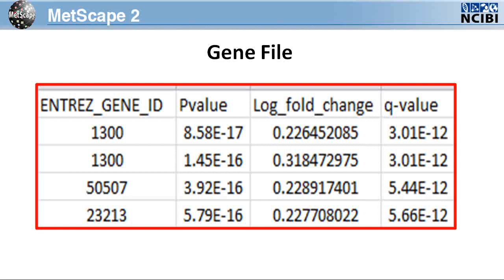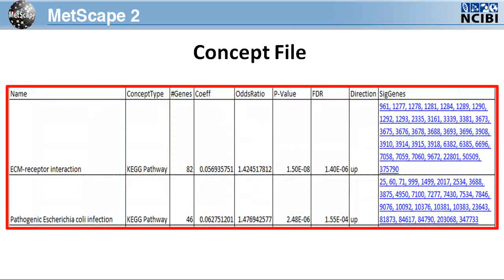This portion of the tutorial will cover building a network based on experimental data. I will start by showing you the structure of each type of data file. If you choose to load a gene file, it should include the Entrez Gene ID, the p-value, and the fold change or log fold change. You can input all genes, for example from a microarray — this is required for LRPath. If you choose to load a concept file, the file should include the concept names, the concept types, the number of genes associated with each concept, the coefficient, odds ratio, p-value, false discovery rate, direction, and the list of significant genes.